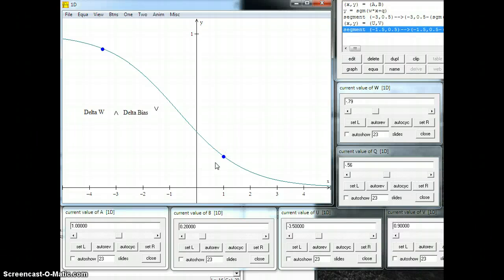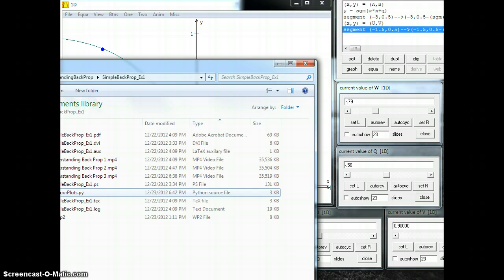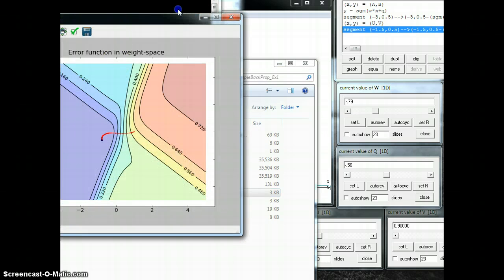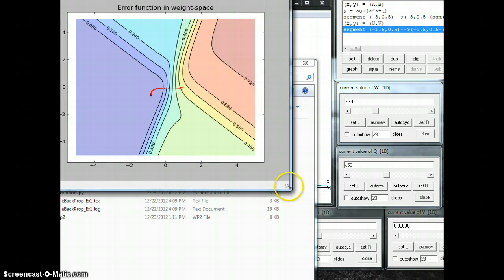This is going to have to get turned into a couple videos because that went too long. This negative 0.79, negative 0.56 is the solution we found by pulling it from the graph here that we were just looking at.